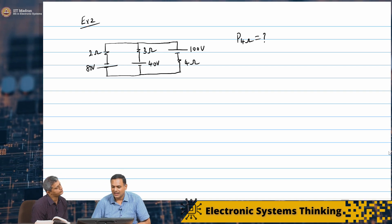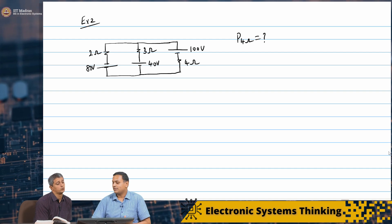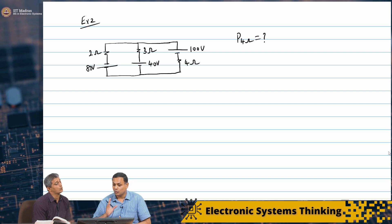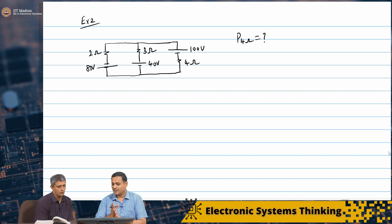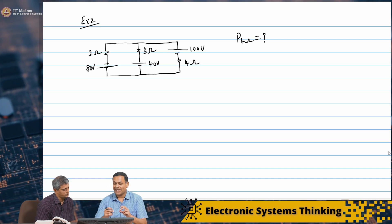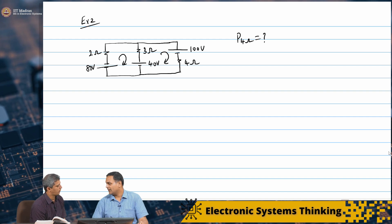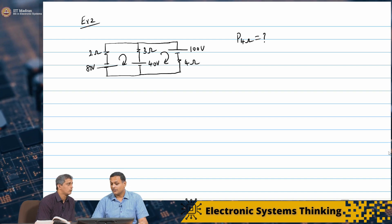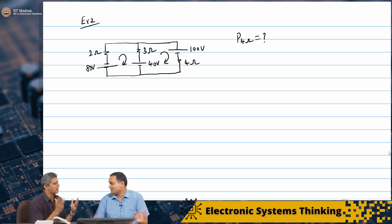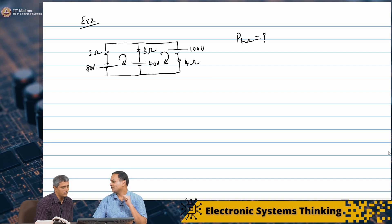We have 3 voltage sources. We can go ahead and set up the equations in the loop by applying KVL around these two loops. Or we could actually use superposition — this problem is tailor-made for superposition. So let us use superposition and apply these voltages one by one.